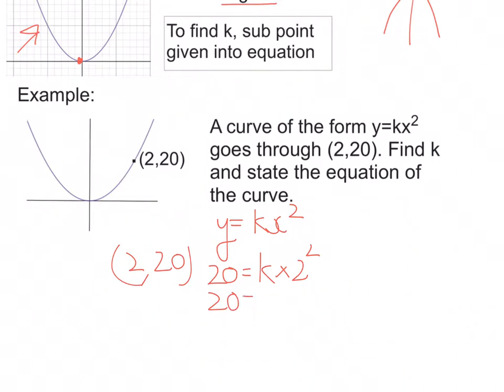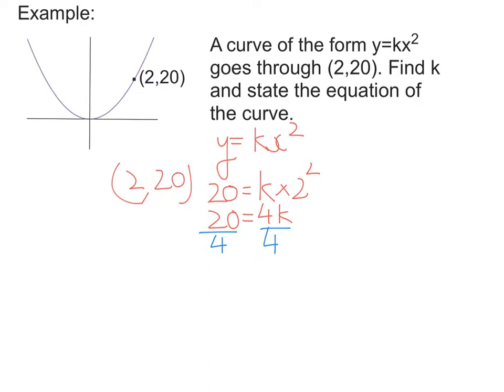So we're going to have 20 equals, well, 2 squared is 4, so we've got 20 equals 4k. Divide both sides by 4, because I need to get k on its own. And we're going to get k equals 5.